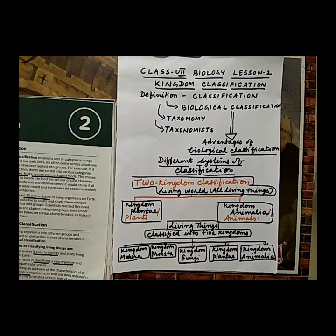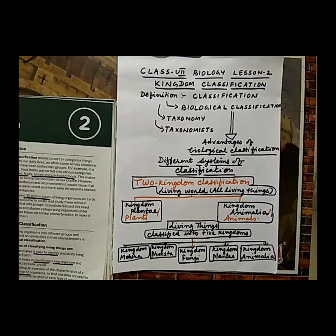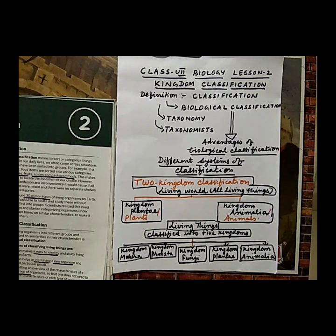In day-to-day life we are able to categorize many things. For example, in a supermarket we categorize things as vegetables, fruits, spices, cereals and pulses. Similarly, in a library we categorize books according to their subjects. Biological classification means putting organisms into different groups and subgroups based on similarities in their characteristics.